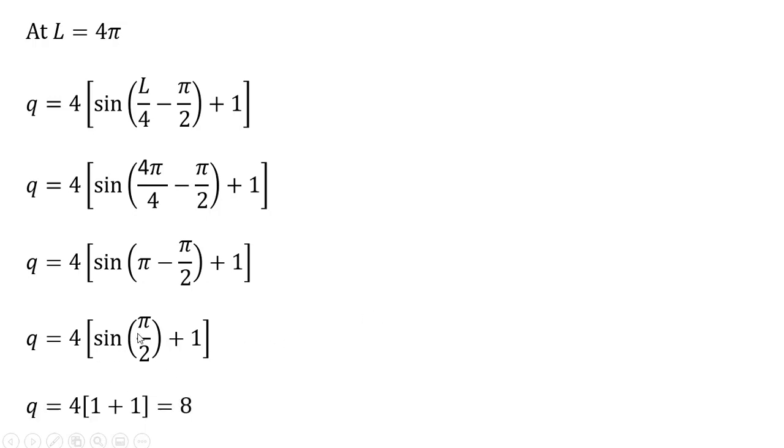The sine of π divided by two is just one. And we have this other one here. So we're going to get four times two or eight. So that is the maximum output for this firm. It occurs when L equals four π. And when L is four π, the firm produces eight units of output.